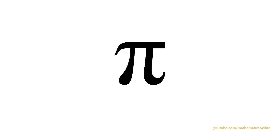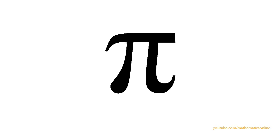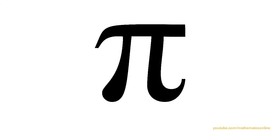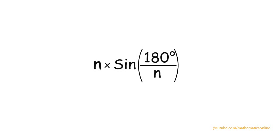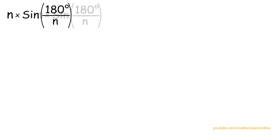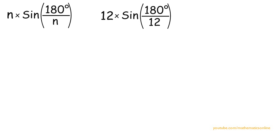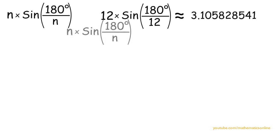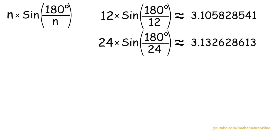This is pi — but how did Archimedes calculate it? Here is a formula derived from Archimedes' method that approximates the value of pi. We can input any positive integer for n and the result will give us an approximate value of pi. The higher the value we input for n, the closer we get to pi.